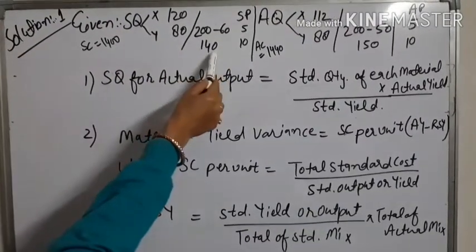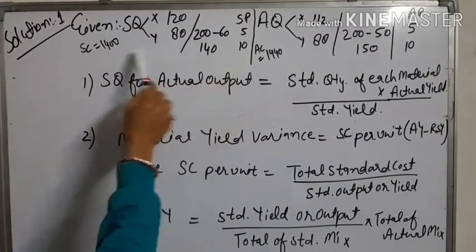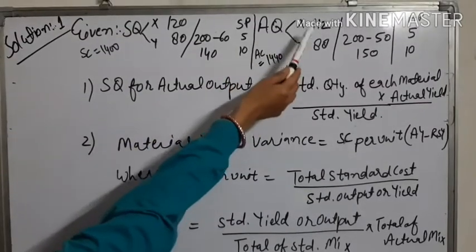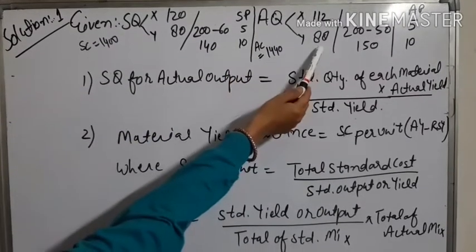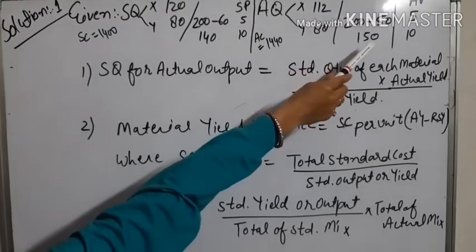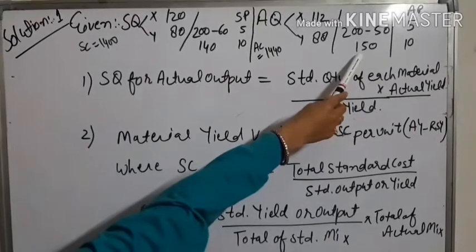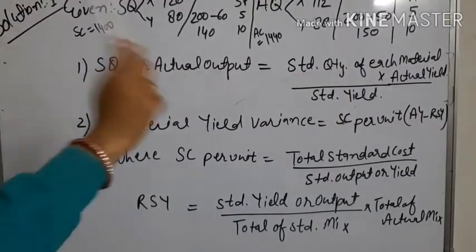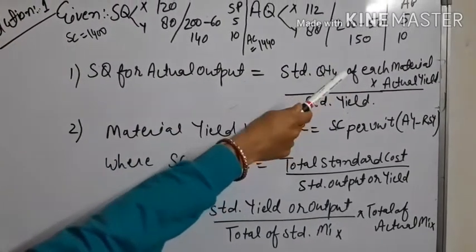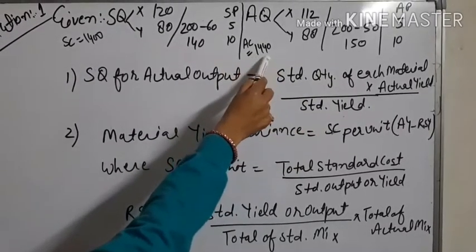The standard yield or output is 140. Standard price for X and Y gives a total standard cost of 1400. Actual quantity for X and Y is 112 and 88, total is 200, loss is 50, and actual yield or output is 150. Actual price for material X is 5 and for material Y is 10, and actual cost is 1440.